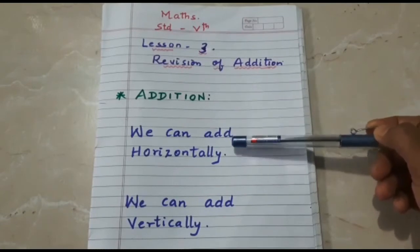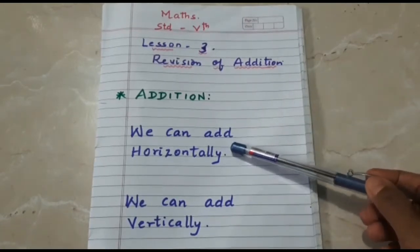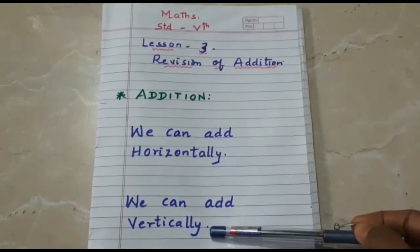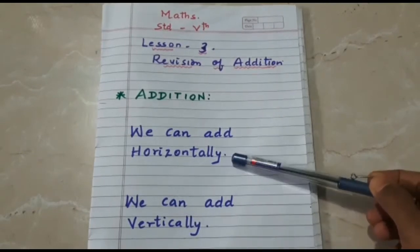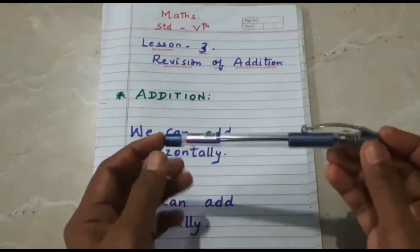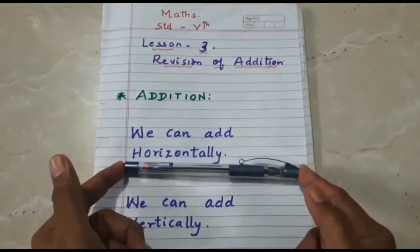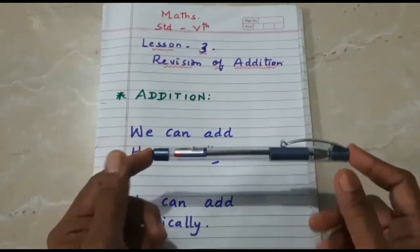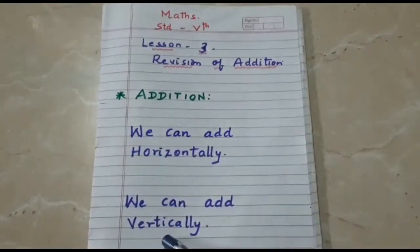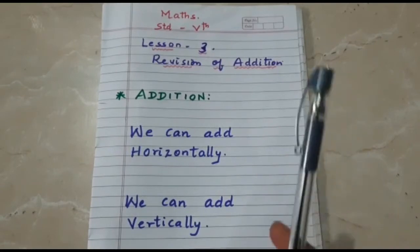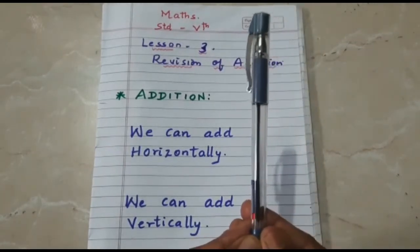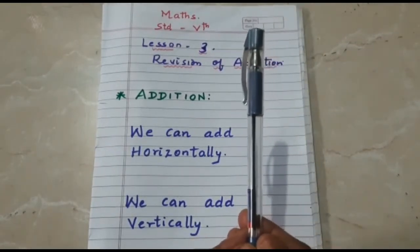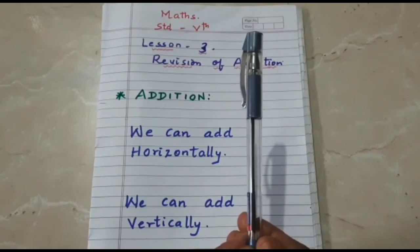We can add in 2 ways, that is we can add horizontally or we can add vertically. What is the meaning of horizontal? If I place the pen in the sleeping position, this is known as horizontal position. Now, what is the meaning of vertical? If I place the pencil in the standing position, this is known as vertical position.